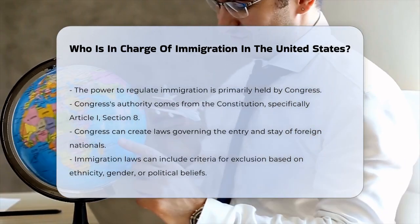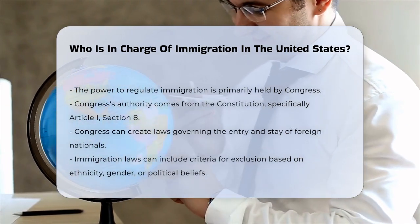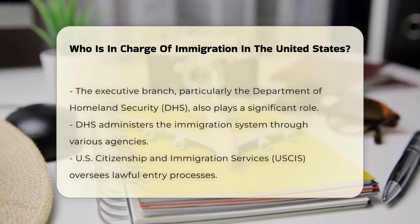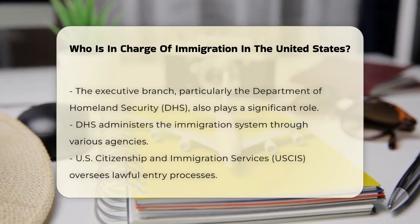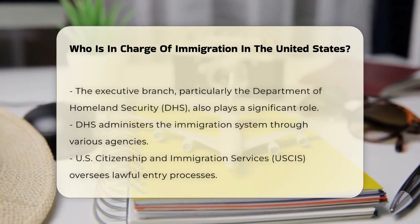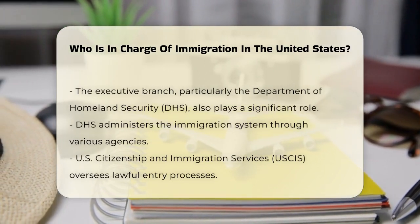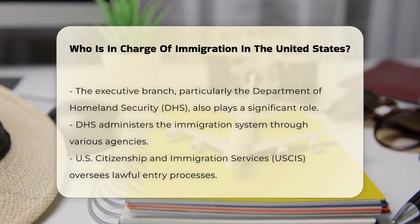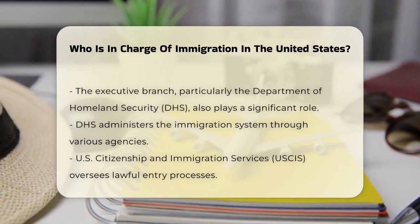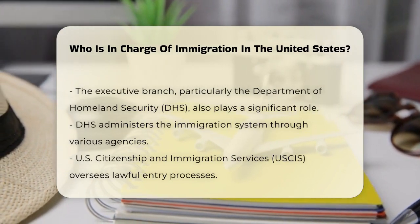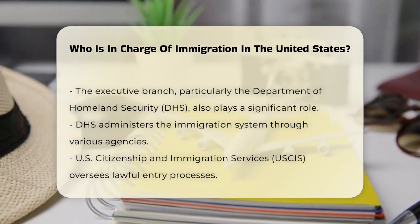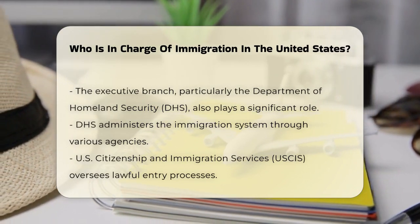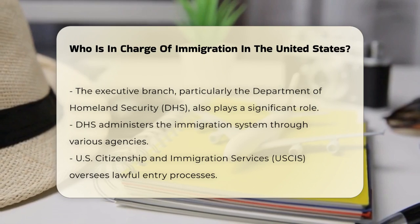Congress's power over immigration is quite extensive. It can make laws that decide whether foreign nationals can enter or stay in the United States. This includes setting rules for the admission and exclusion of non-resident aliens, and even laws that might exclude aliens based on certain criteria like ethnicity, gender, or political beliefs.